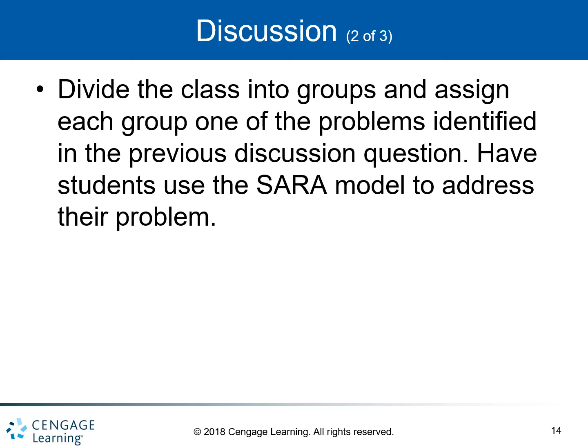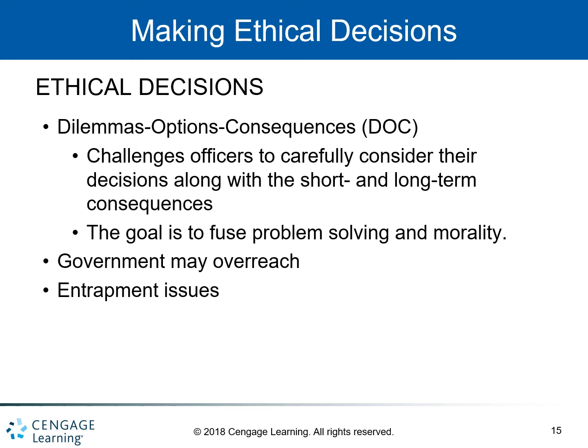Now let's talk about making ethical decisions. Ethical concerns often surround undercover police work such as sting operations. Sting operations carry the potential of entrapment issues. Entrapment is the act of government agents to induce a person to commit a crime not normally considered by that person, for the purpose of prosecuting them. Despite the ethical dilemmas, police argue that the benefits far outweigh the potential costs and that deception is a soft coercion compared to other types police are authorized to use.